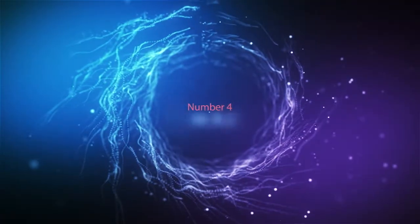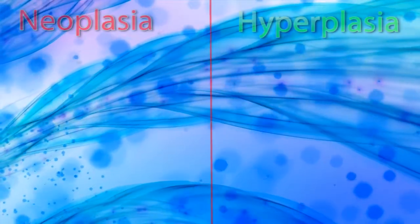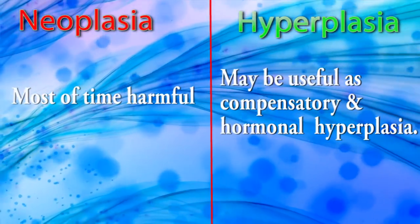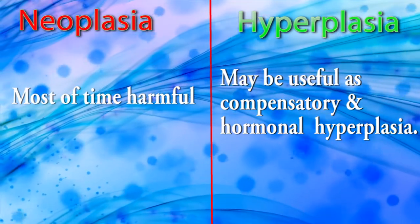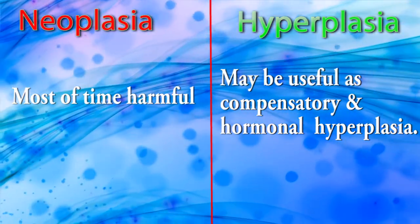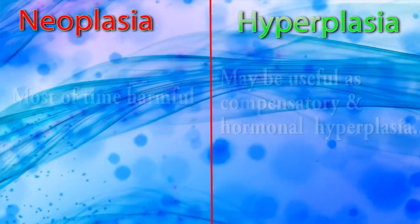Difference number four: harmfulness. In neoplasia, the condition is most of the time harmful. But hyperplasia may be useful, as in compensatory and hormonal hyperplasia.